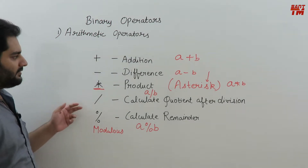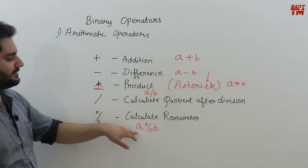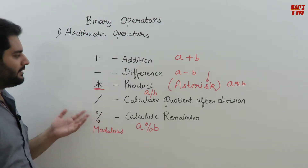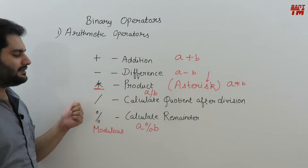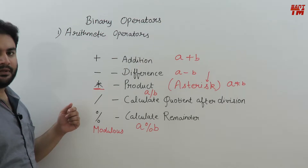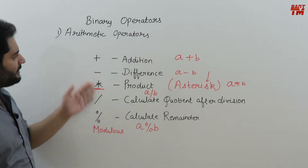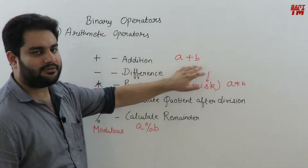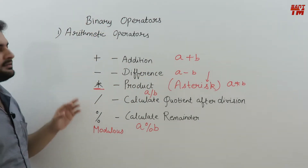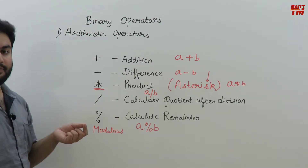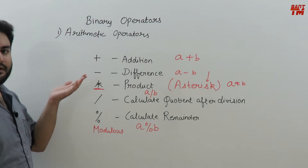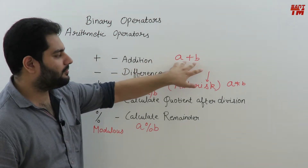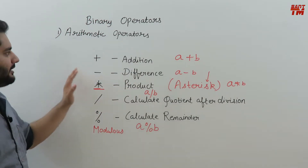We already saw an example of these operators in the simple calculator program in our previous video, where we used these operators on a and b and stored results in variables like sum, difference, product, div, and rem. For arithmetic operators it is compulsory that we need two operands, which is why they fall under binary operators. Some arithmetic operations work on single operands — those will be covered under unary operators.